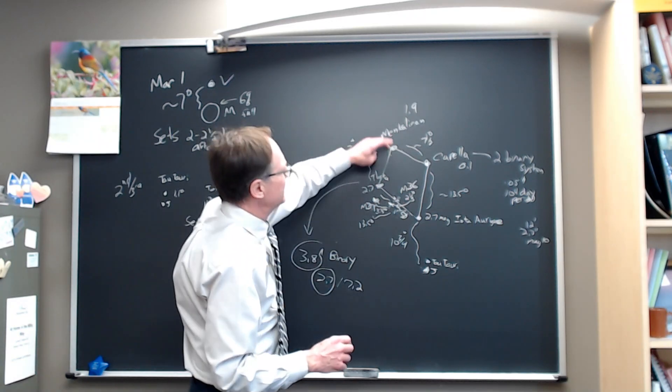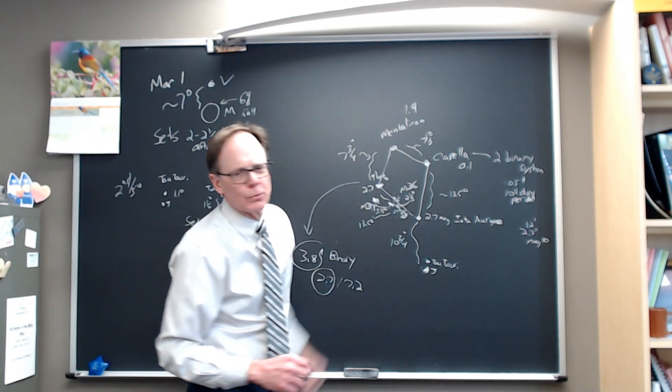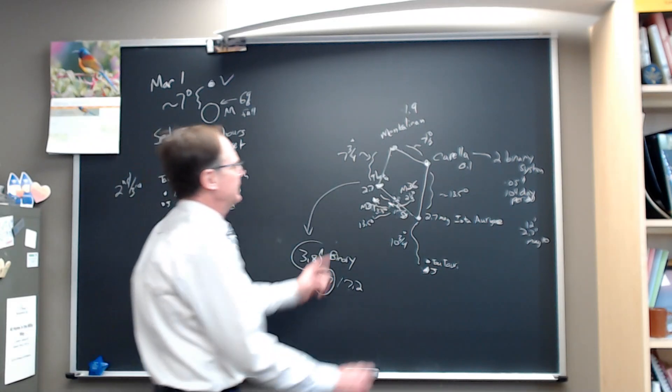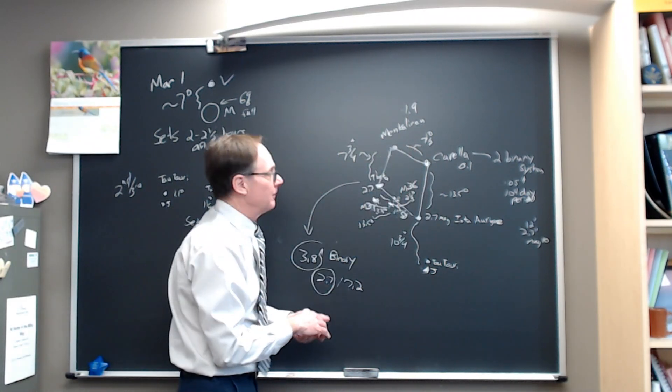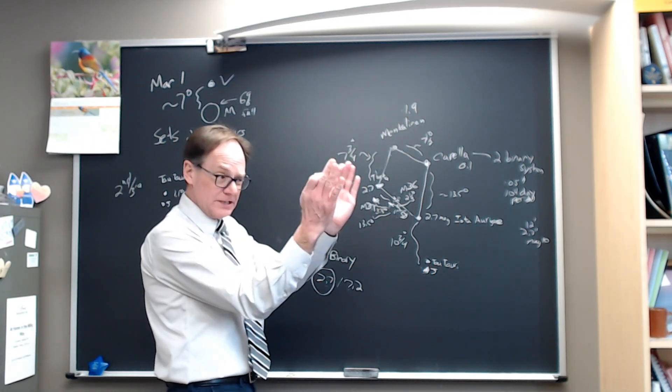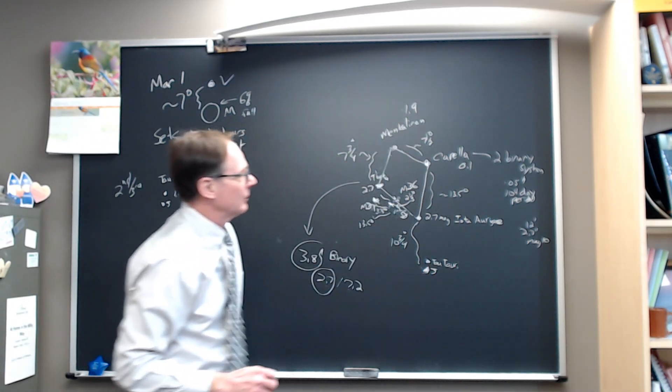Continue on up to Mincalanon at the top of the kite. That's magnitude 1.9, about seven and three quarters degrees up, seven and a half degrees up from Capella. Pretty symmetric. This is a pretty symmetric kite shape that we have around here.